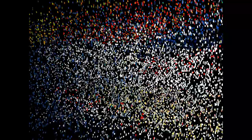What happens when a low ionization energy gets together with a high electronegativity? On the left-hand side you see an atom with three protons — that would be lithium, with atomic number three. Over on the right-hand side, you see an atom with nine protons — that would be fluorine. Fluorine, in the upper right-hand corner of the periodic table, has a very high electronegativity and wants to take electrons away from other atoms. Lithium has a low ionization energy, which means it gives up that one electron in the second orbital very easily.